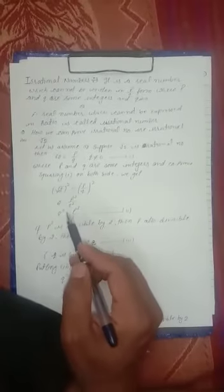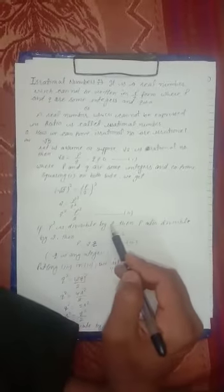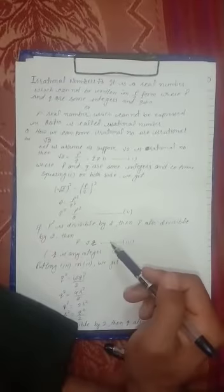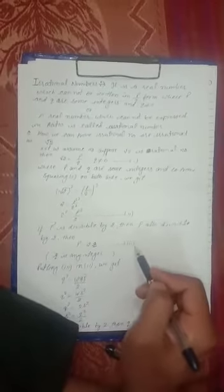Now squaring equation one on both sides, we get root 2 square is equal to p upon q whole square. After solving it, I get 2q square is equal to p square. If p square is divisible by 2, you can see here p square is dividing by 2, so I can say that if p square is divisible by 2 then p also divisible by 2. It means p is equal to 2r, its equation 3.